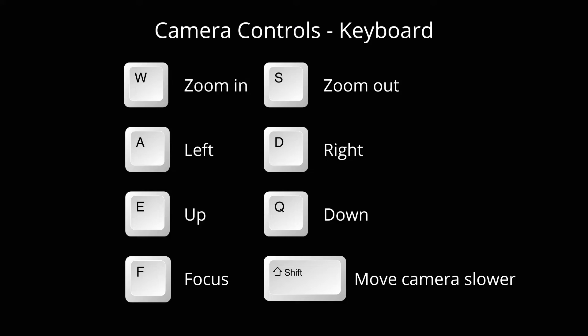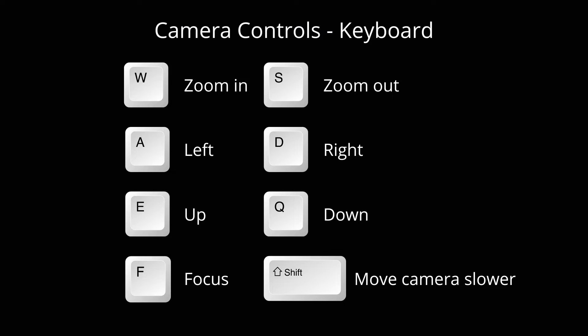Some other commands available are the Shift key, which moves the camera slower — notice it was going pretty fast before, but pressing Shift makes it go a little slower. And if you want to focus on a selected object, press F and it'll focus on that particular object.